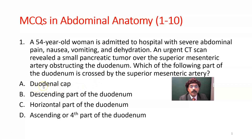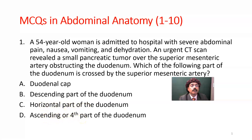Options: the duodenal cap, descending part (second part) of the duodenum, horizontal part of the duodenum (third part), or ascending (fourth part) of the duodenum. Which part is crossed by the superior mesenteric artery? The answer should be the horizontal part of the duodenum — C.